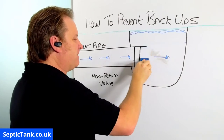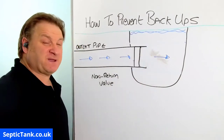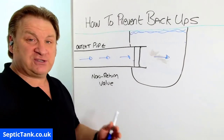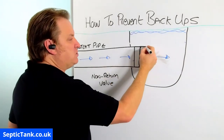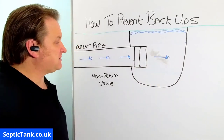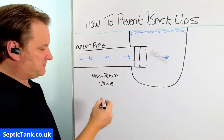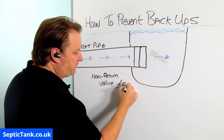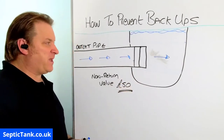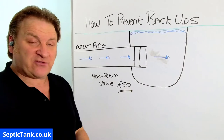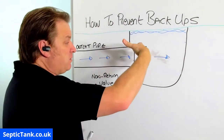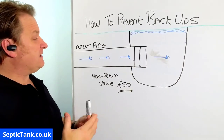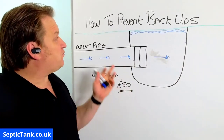That flap will save you so much time, money, and hassle — it'll save you having to spend two or three thousand pounds on new bearings, new shafts, and a new compressor in your sewage system. These non-return valves are something like 50 quid off the top of my head, and there are no electrics — you just find the end of your pipe, put it on, and job done.